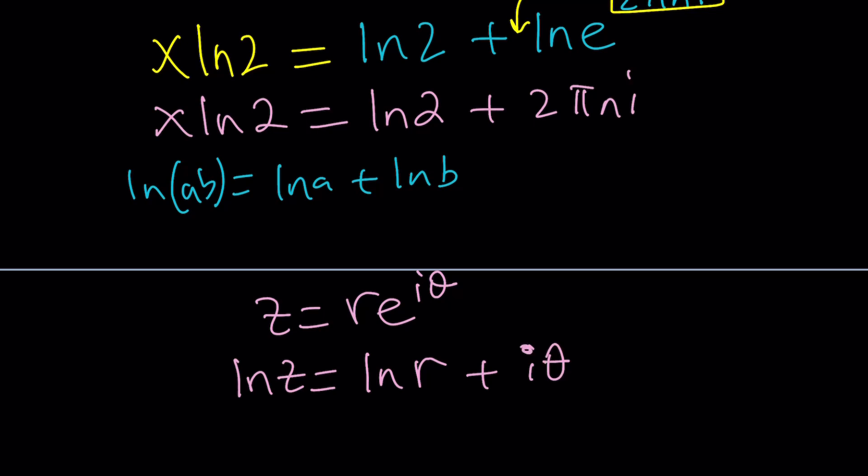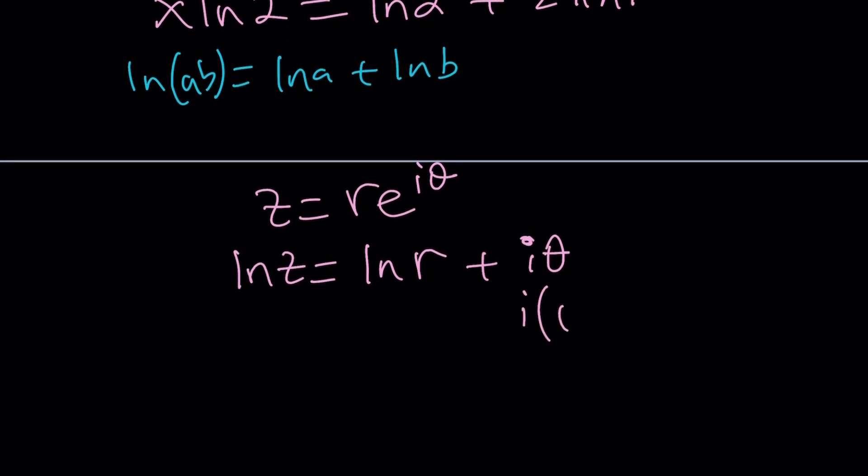And, of course, I'm kind of talking about the principal branch. Obviously, you can also add multiples of 2 pi to this. So write this as i times theta plus 2 pi k. Make sense? Okay.